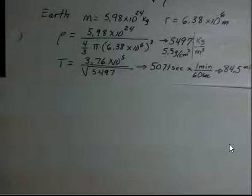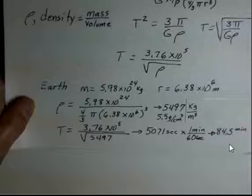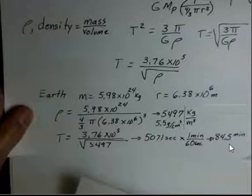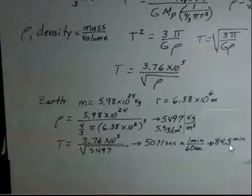We've got the density. Let's make use of that. Our constant that we developed above divided by the square root of 5497. I came up with 5,071 seconds. Divide that by 60, 84.5 minutes, which I know is the correct answer from other physics problems.